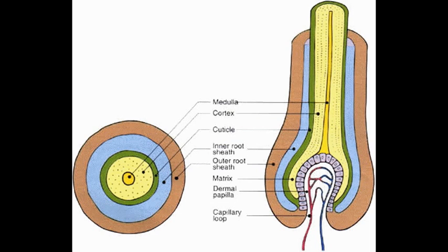Here, we have an enlarged hair strand, which is composed of three layers. I will go over those in a minute. But if you look below, you will see the hair root, which is enclosed within a hair follicle. And at the base of that hair follicle is the dermal papilla.